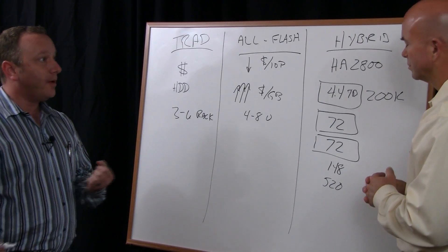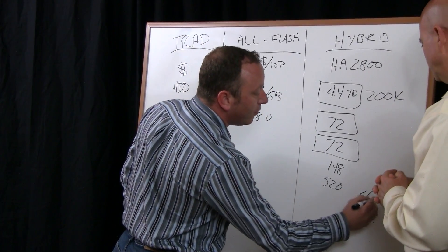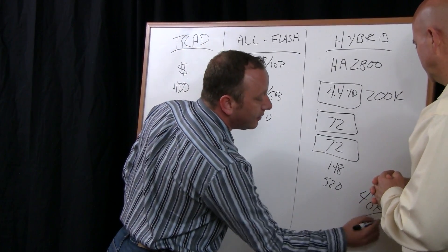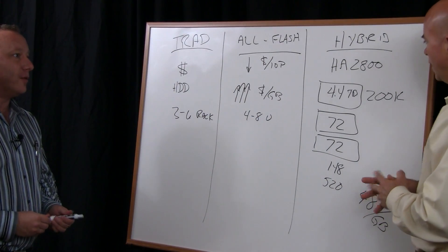So you've got in a 10U package a half a petabyte of capacity that can run at 200,000 IOPS. So you have real nice dollars per IOPS. And the math here at street price, this comes out to 48 cents a gigabyte. An extremely strong dollars per gigabyte as well.